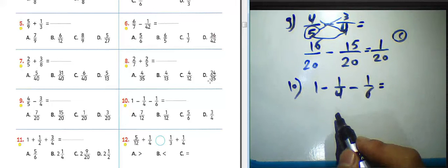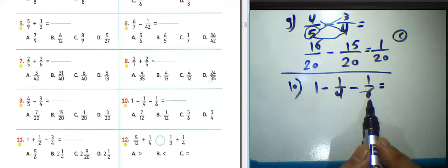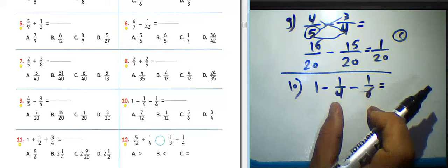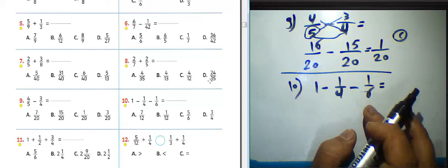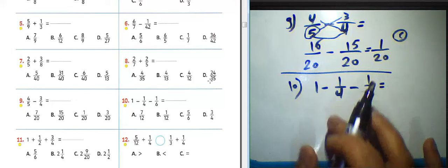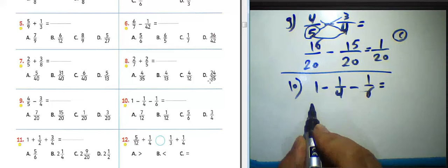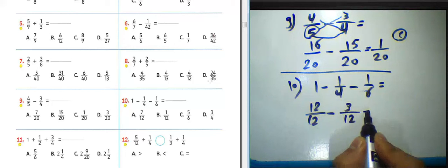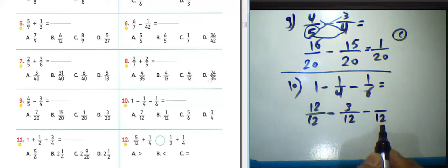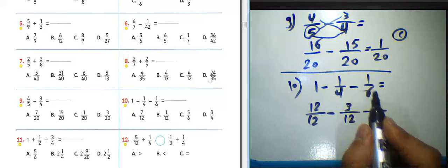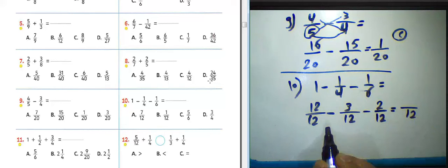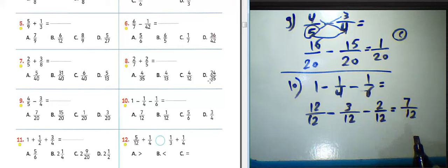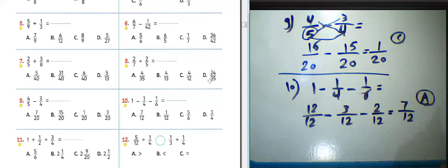Question number ten: 1 subtract by 1 over 4 subtract by 1 over 6. We can solve this by writing the least common multiple between 4 and 6, which is 12. Convert 1 to 12 over 12. 4 times 3 equals 12, and 1 times 3 equals 3. Two times 6 equals 12, and 2 times 1 equals 2. So 12 minus 3 equals 9, and 9 minus 2 equals 7. The result will be 7 over 12. Choose letter A about question number ten.